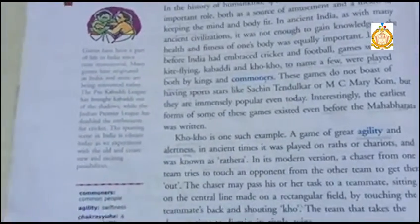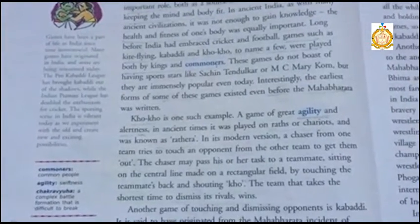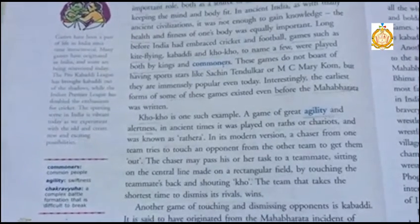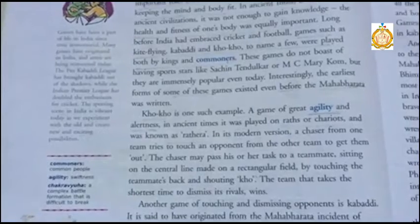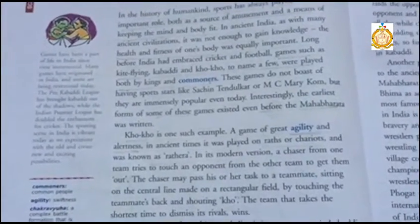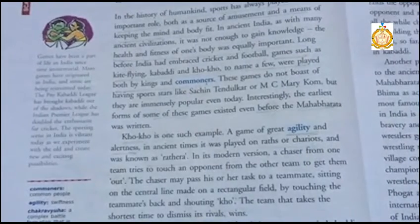One by one, the chapter explains the games. First is Kho Kho. Kho Kho is a game of great agility and alertness. In ancient times, it was played on ruts and chariots and was also known as Ruthira. In the modern version, the chaser from one team tries to touch an opponent from the other team to get them out. The chaser may pass the task to a teammate sitting on the central line of a rectangular field by touching the teammate's back and shouting 'Kho Kho.' The team that takes the shortest time to dismiss its rivals wins.